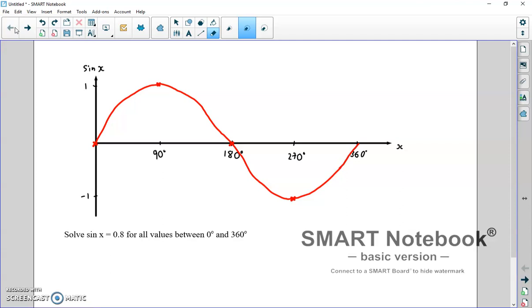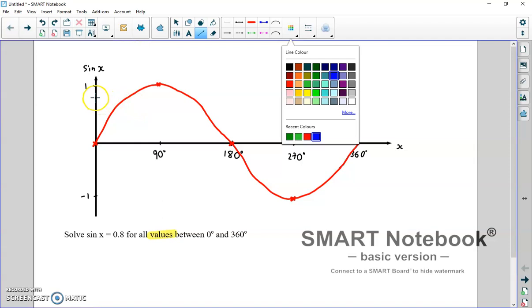It says, solve sine x equals 0.8 for all values between 0 and 360 degrees. And you can see straight away, if you're paying attention, you've got the word values with an s on the end. There is more than one solution. So I would always start this by putting a line on our graph. Where it tells us to, so roughly where 0.8 is, so across there.